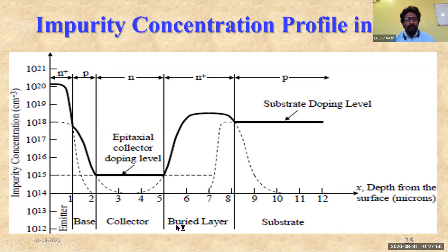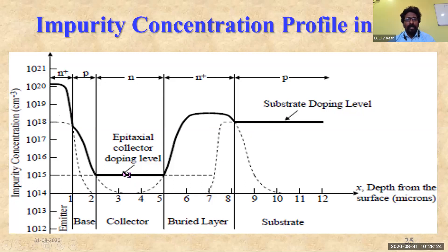For the buried layer, the impurity concentration is 10¹⁸ per cm³. The substrate doping is also constant at 10¹⁸ per cm³ — this should always be kept in mind for a BJT. The collector is constant at 10¹⁵, while the emitter, base, and buried layer impurity concentrations depend on the specific operation for which the BJT is being used.